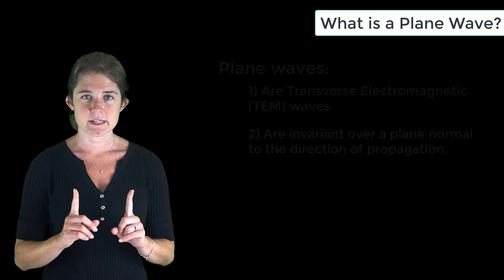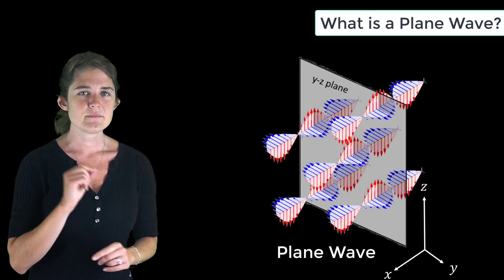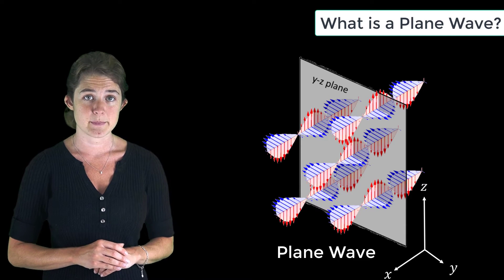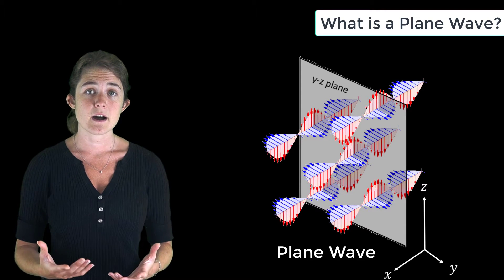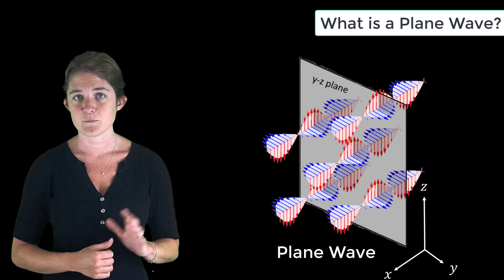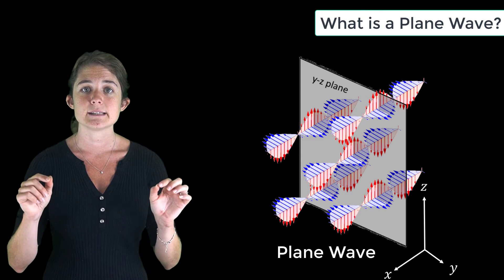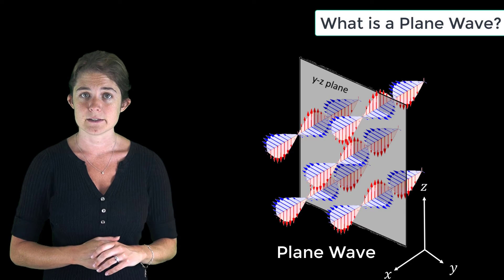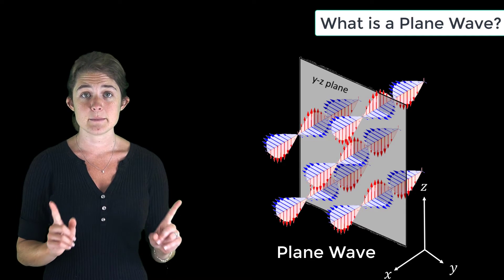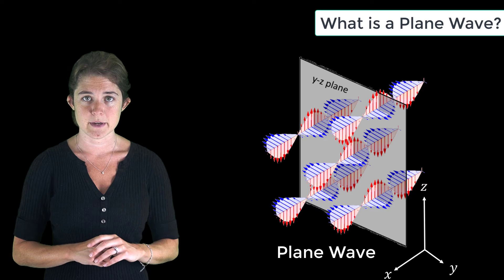This is a representation of a plane wave. You can see that it varies along the axis of propagation, in this case the x-axis, but it's constant along the other two axes, y and z. Every point in the y-z plane sees the same electric and magnetic fields. This is true of any plane normal to the direction of propagation.